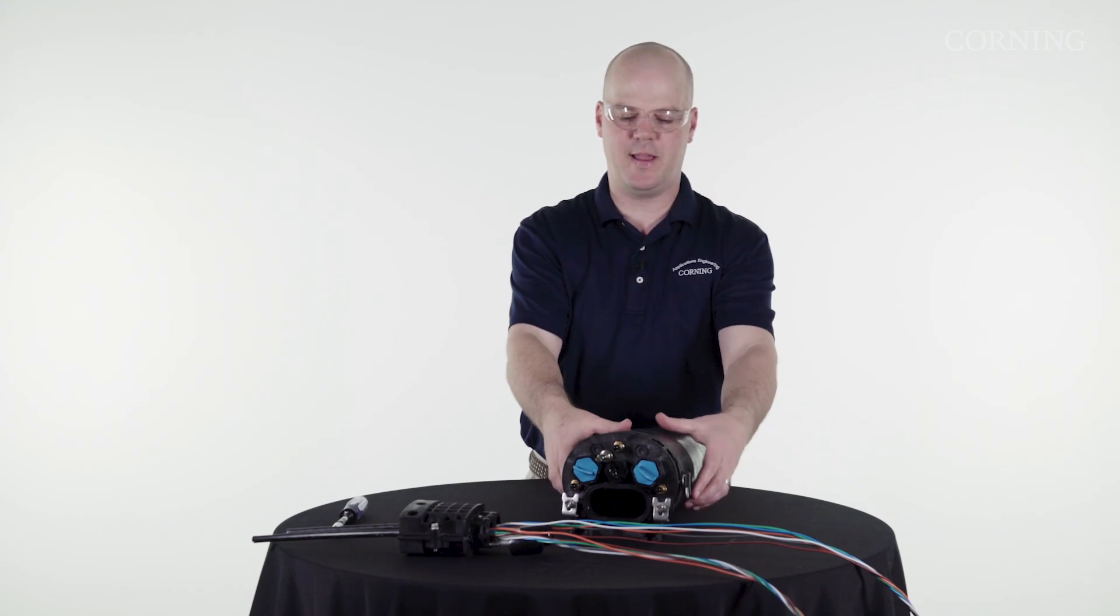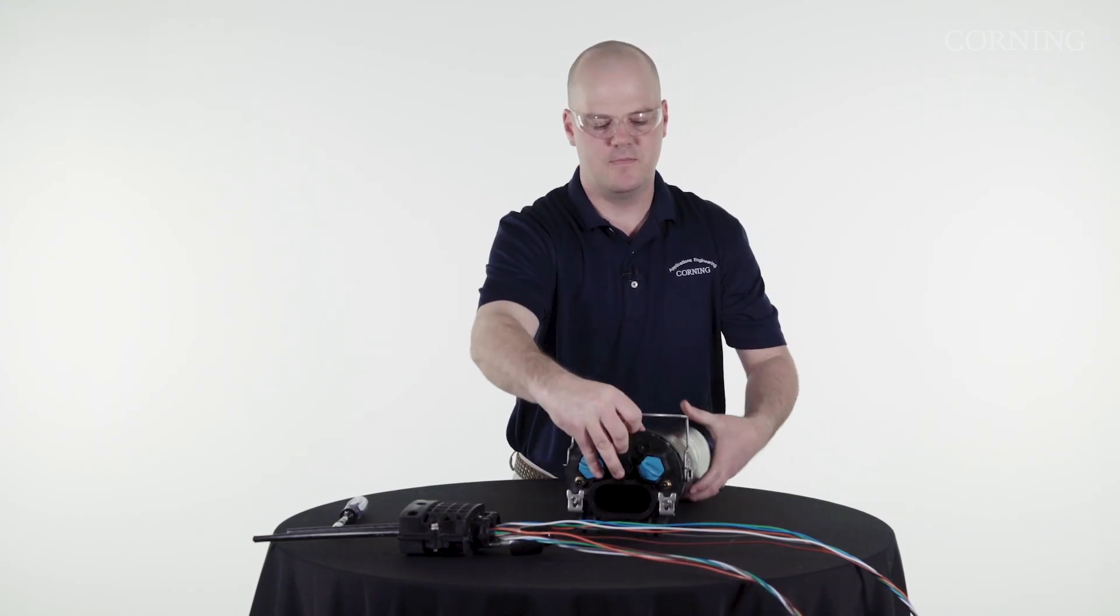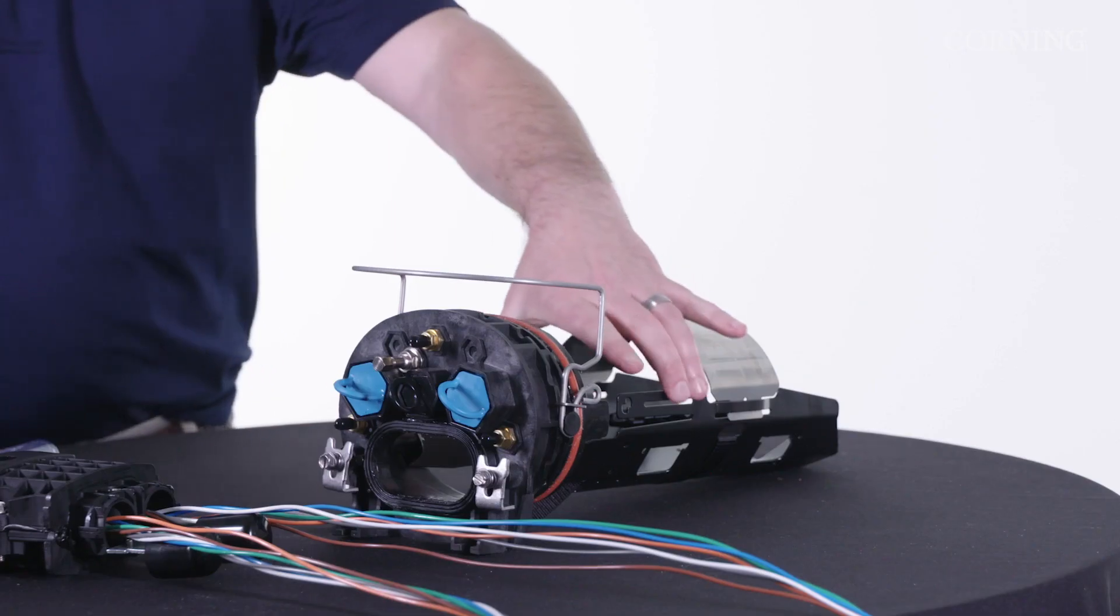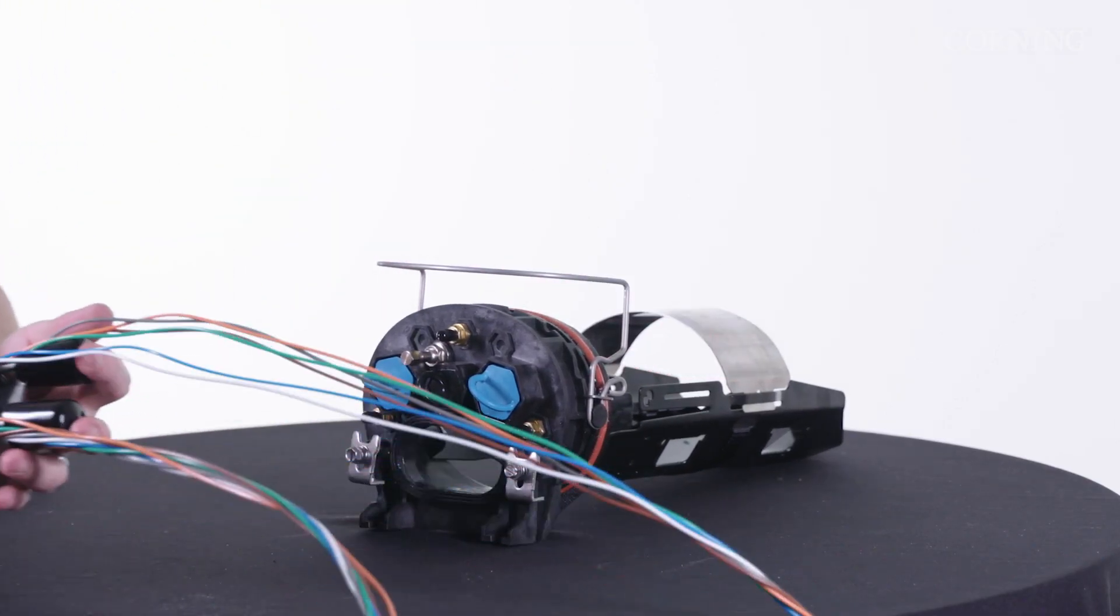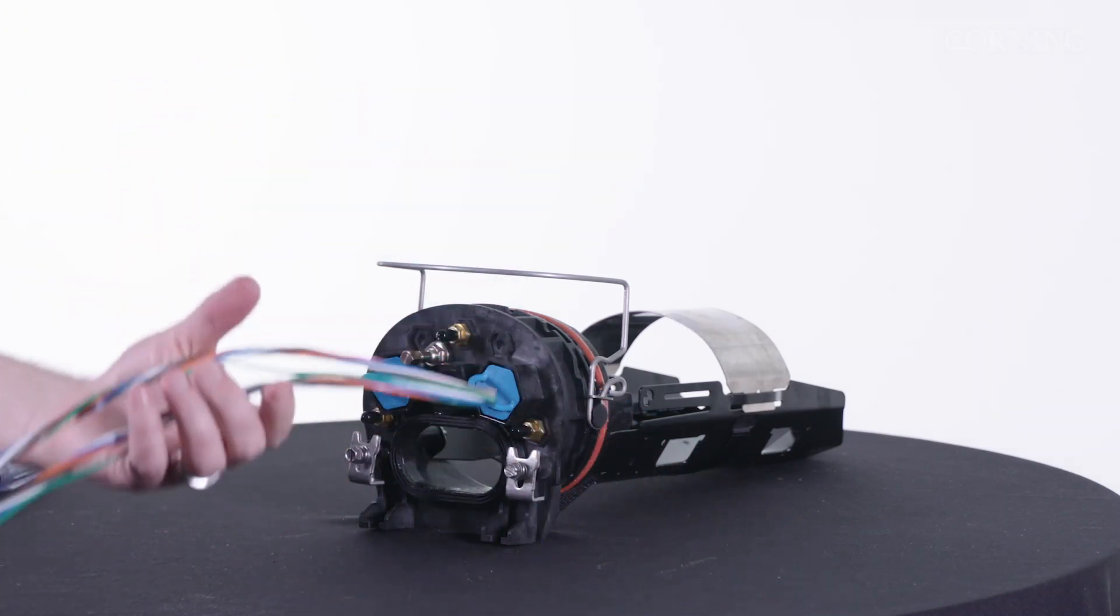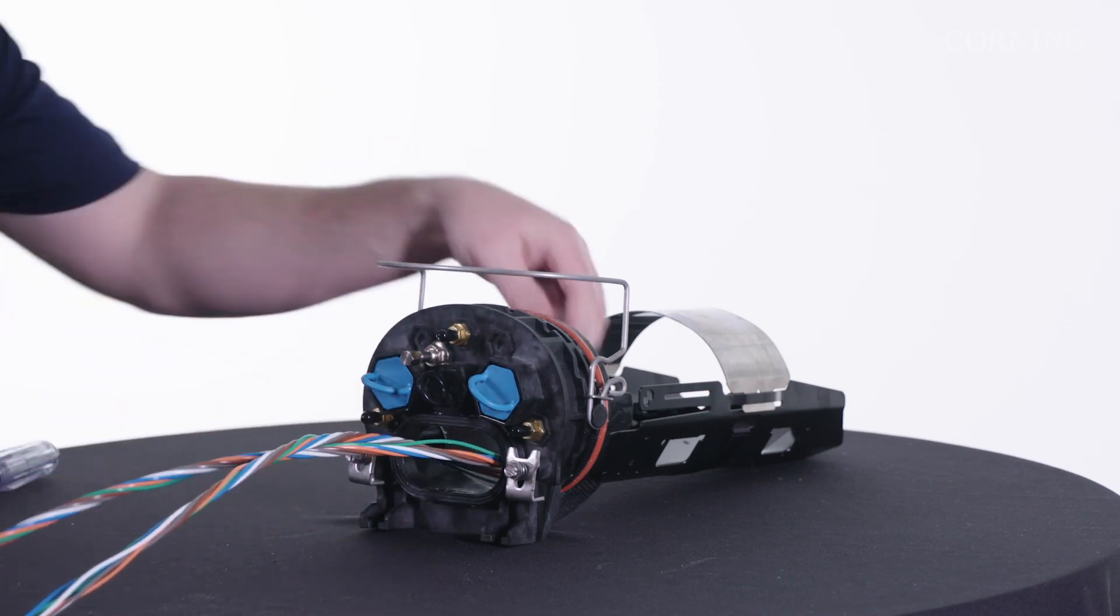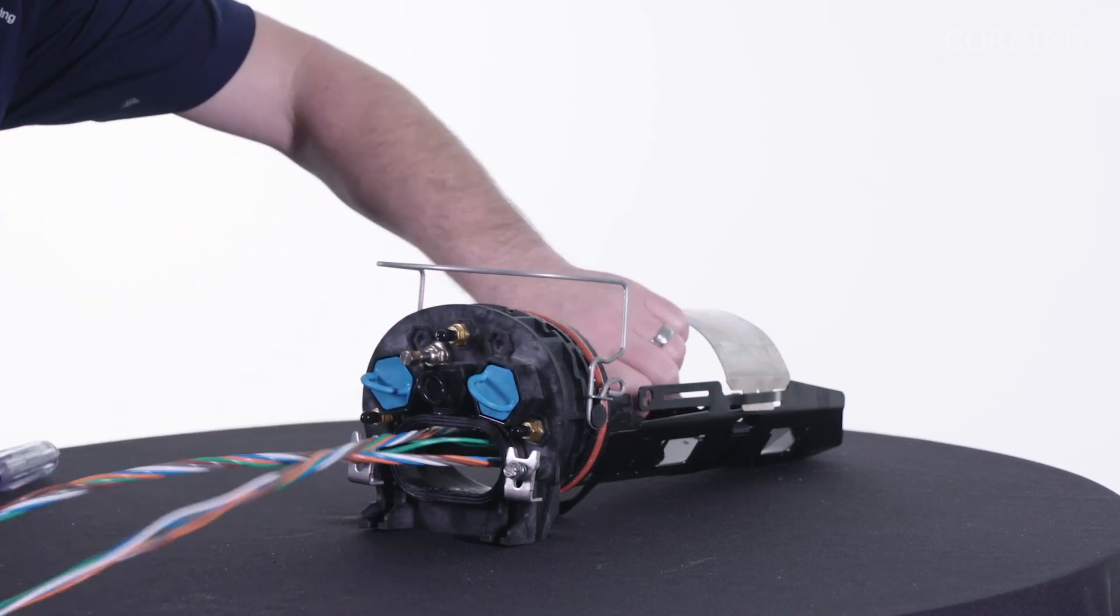I'm going to pull the dome off the back. Set it aside. I'm going to take the double e-cam with the strain relief hardware facing down. Make a loop in the end, being careful not to kink your buffer tubes.